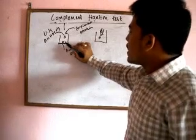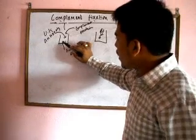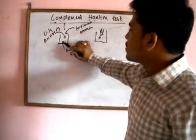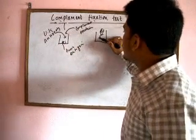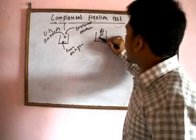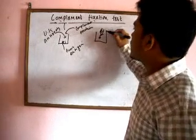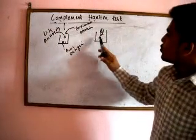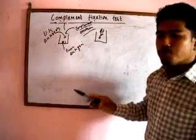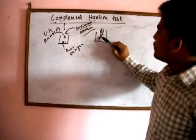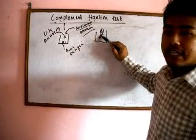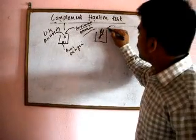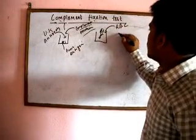So to recap: there is a known antigen, then an unknown antibody is added, forming an antigen-antibody complex. After the complex forms, the complement protein we have also added will bind to — or fix onto — this antigen-antibody complex. Then we add RBCs as an indicator.